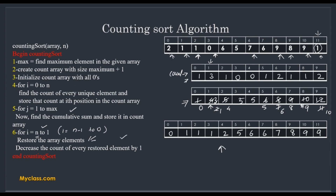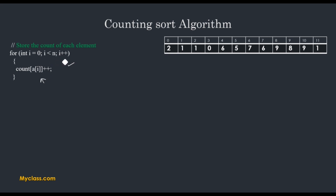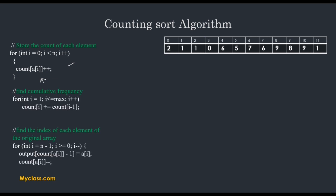That is the sixth step. We are now explaining this again with a C program implementation. Going to the program: the first loop creates and updates the count array. For updating the count array, the loop runs: for int i = 0; i < n; i++, count[a[i]]++. There is another loop for cumulative frequency, and another loop for updating the sorted output list.